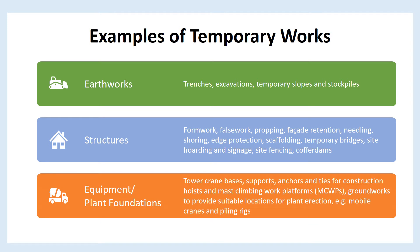3. Equipment or plant foundations such as tower crane bases, supports, anchors and ties for construction hoists and mast climbing work platforms (MCWPs), and groundworks to provide suitable locations for plant erection — for example, mobile cranes and piling rigs.